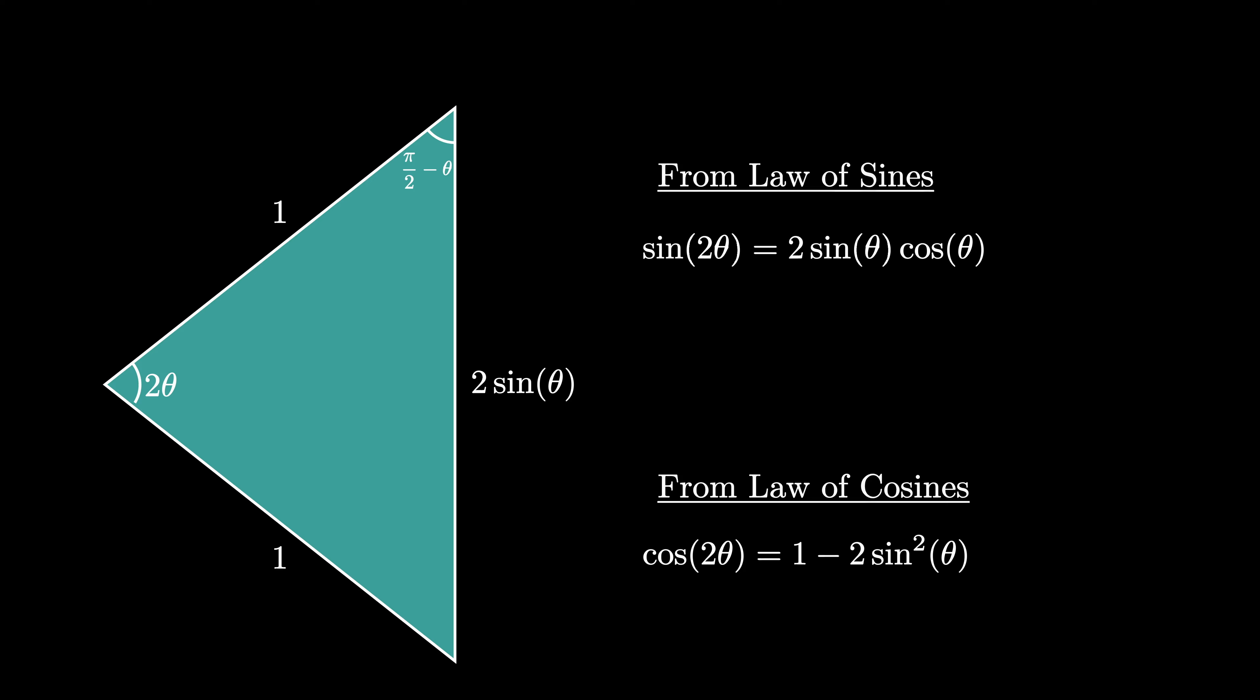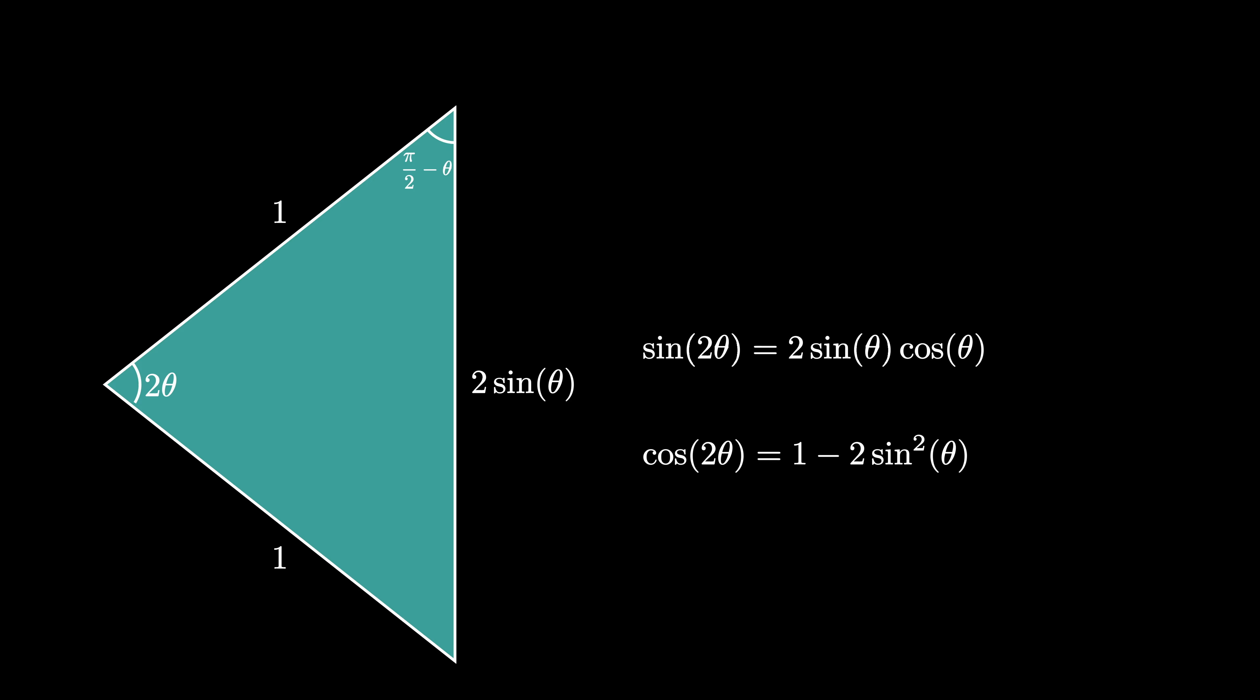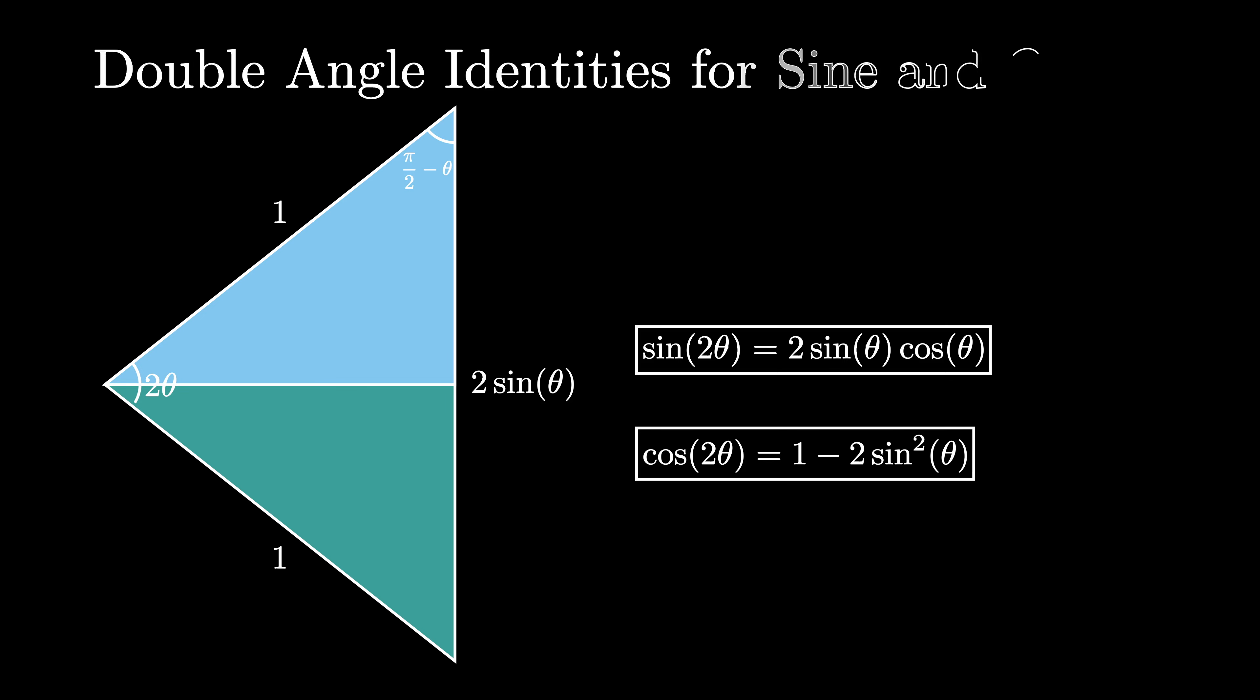We have used one triangle diagram along with the Law of Sines and the Law of Cosines to prove that sine of 2 theta equals 2 times the sine of theta times cosine theta, and cosine of 2 theta equals 1 minus 2 times the sine squared of theta. These are known as the double angle identities for sine and cosine.